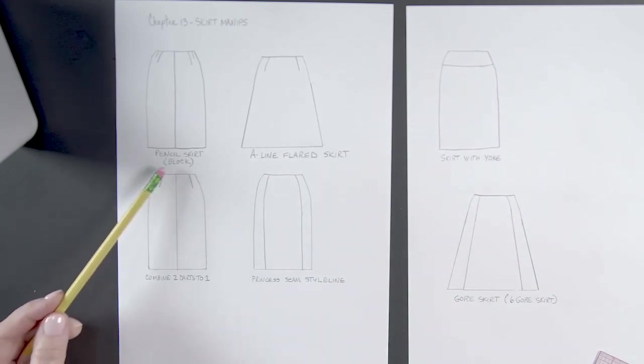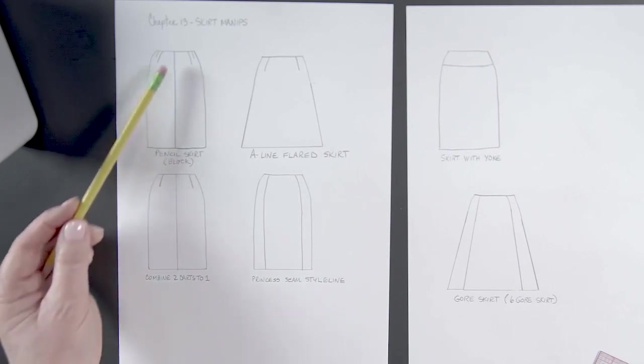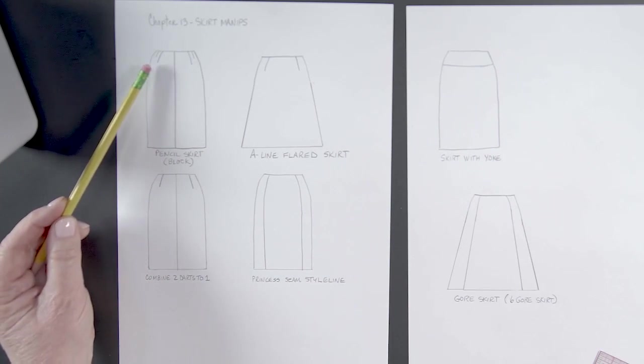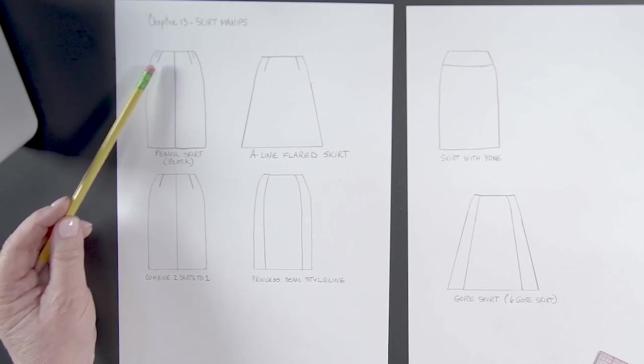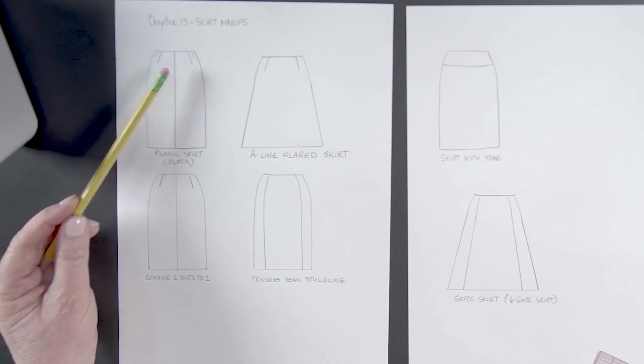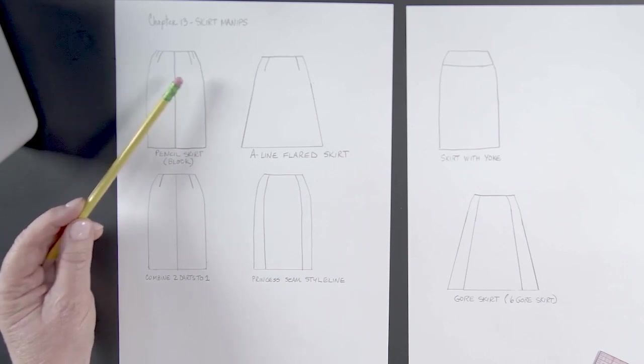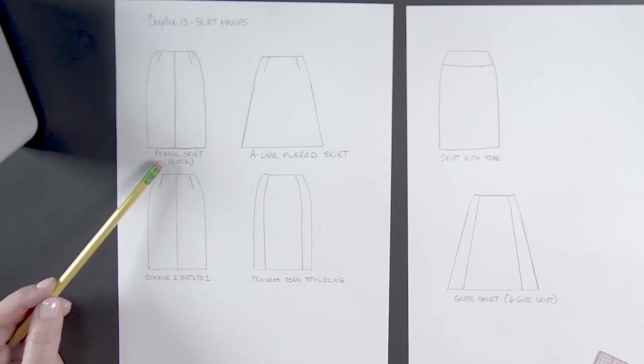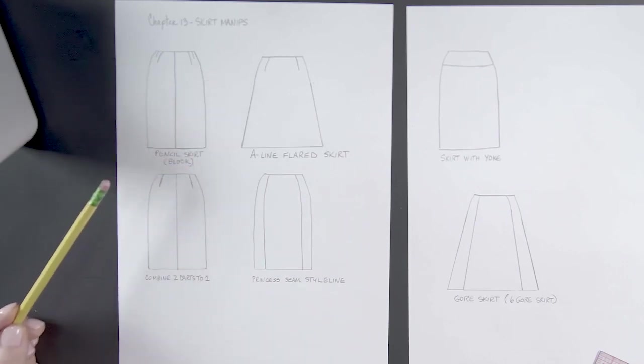Let's look at this one. Here is what we would call a pencil skirt. This is exactly like our block. You can see here there are two darts on either side in the front. That's a pencil skirt. Typically that comes down to the knee about 19 inches or so.